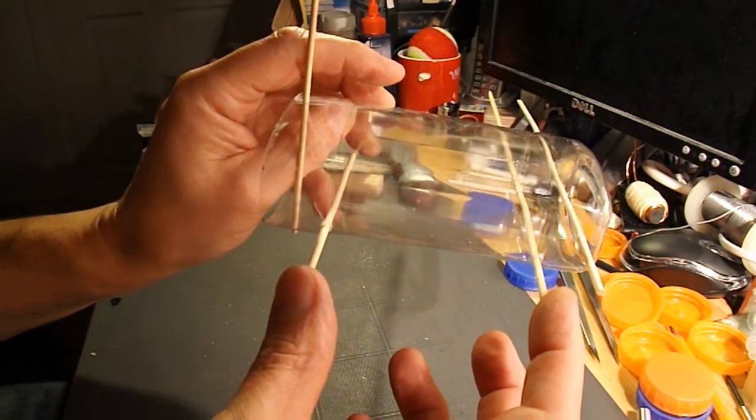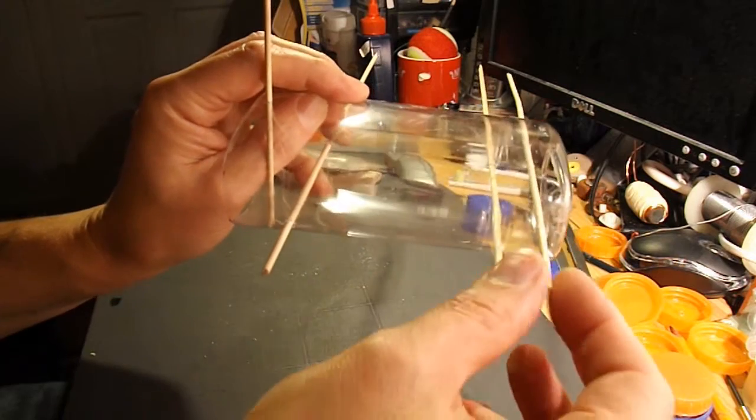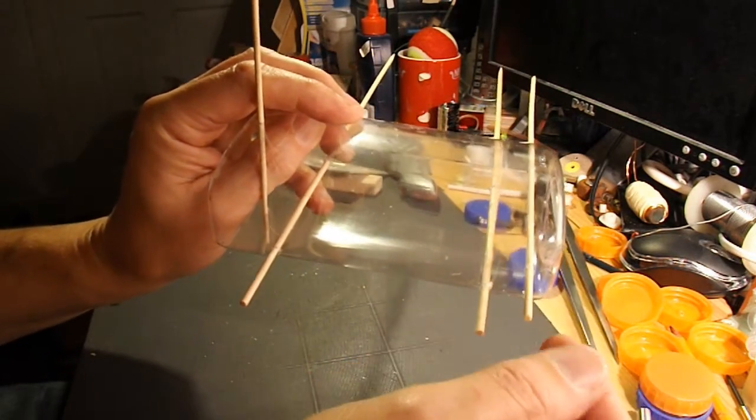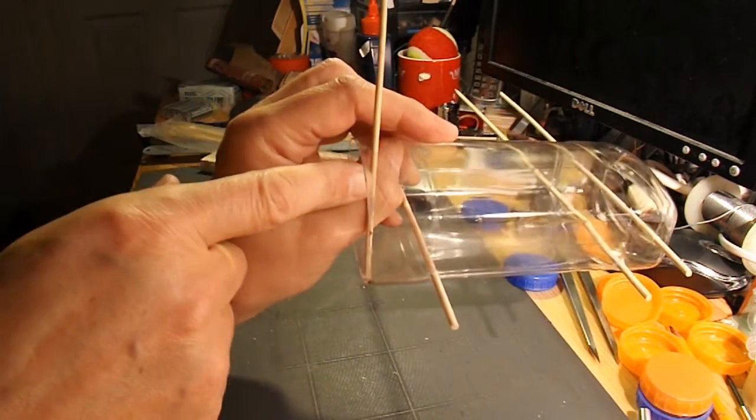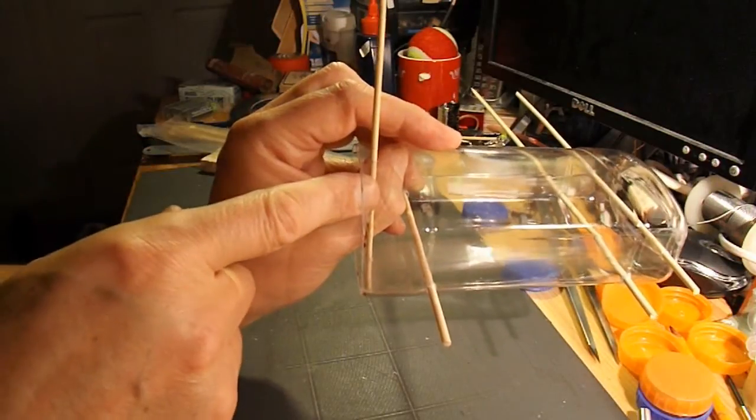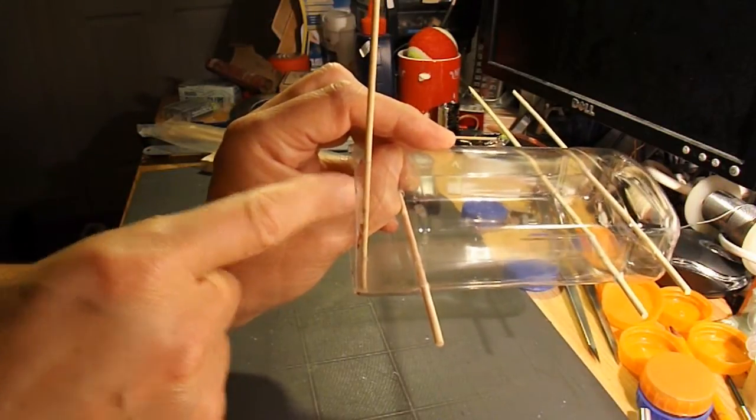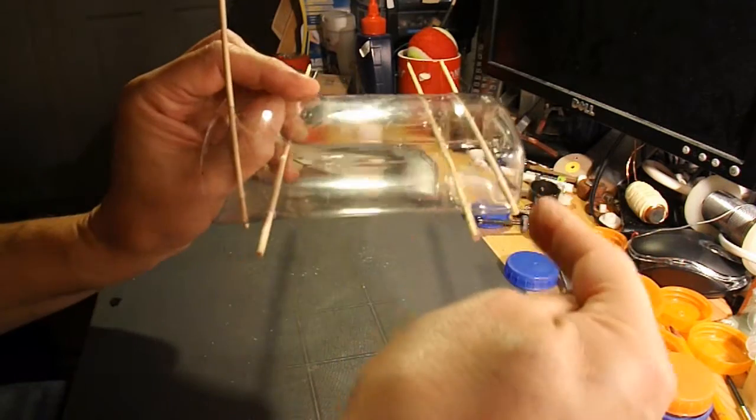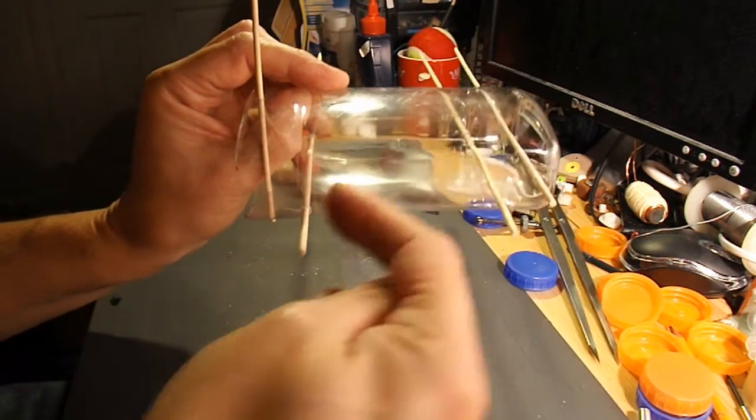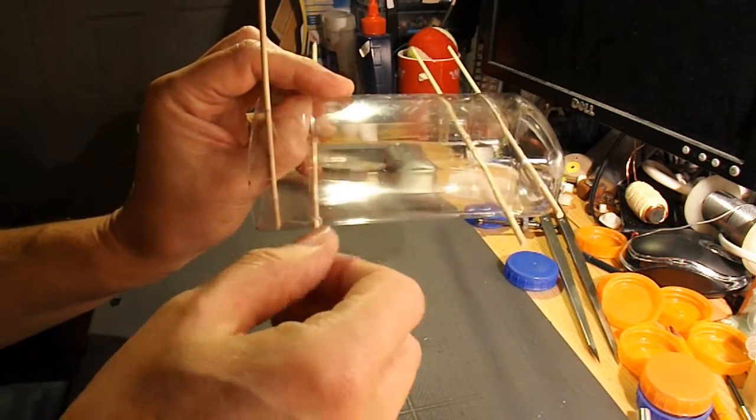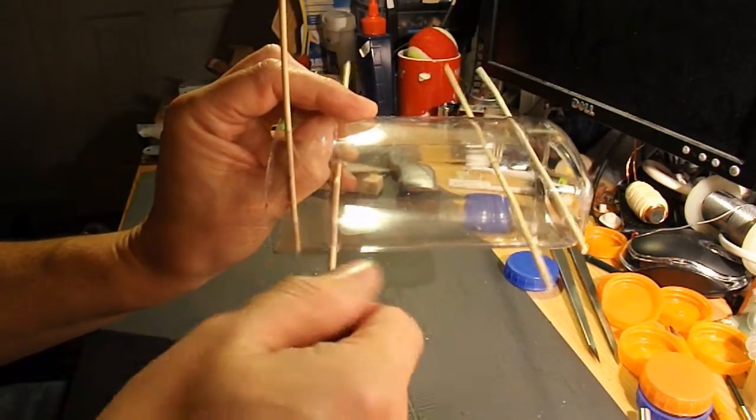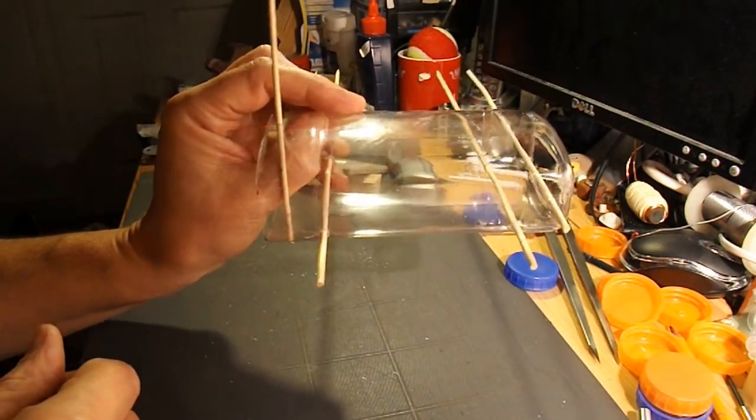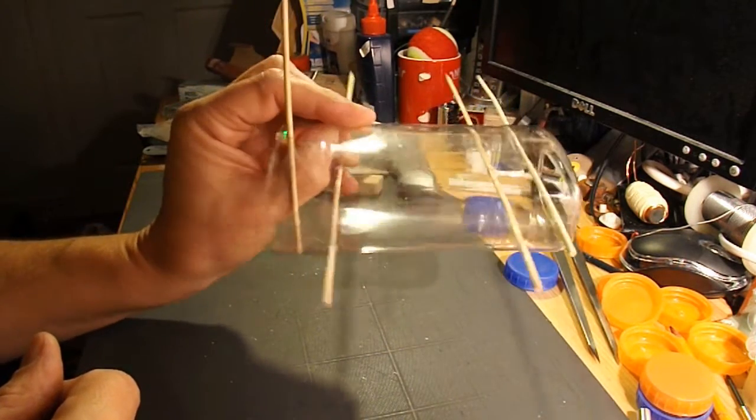These two will be the axles. That one will be the one that the rubber band goes round, and this one at the front is the one that the rubber band actually hooks onto to start with. So it starts here, goes around that one, and then back to this axle, which will have a little peg on it to grip it, so that we can wind it up, and hopefully let it go.